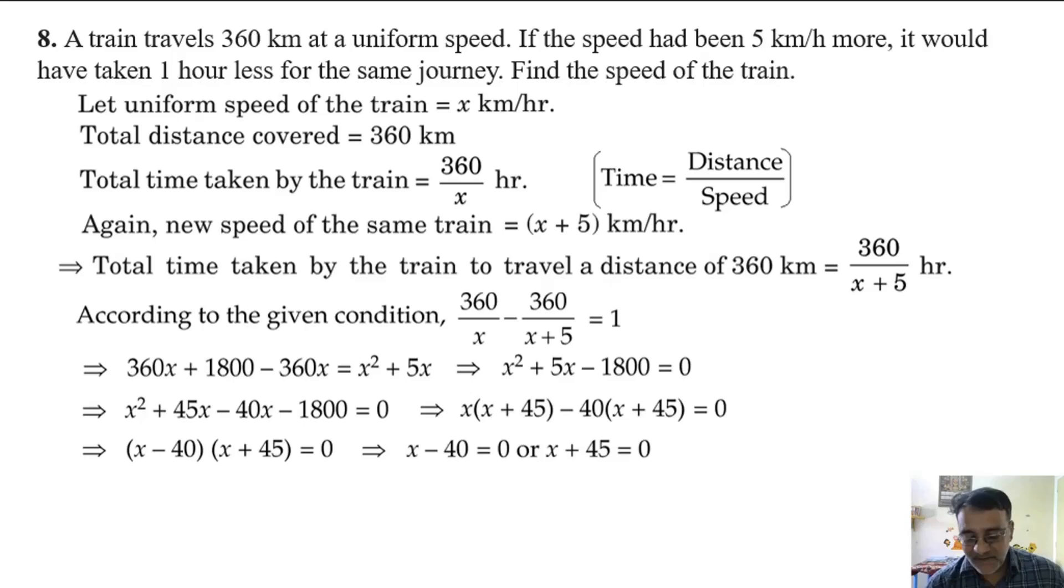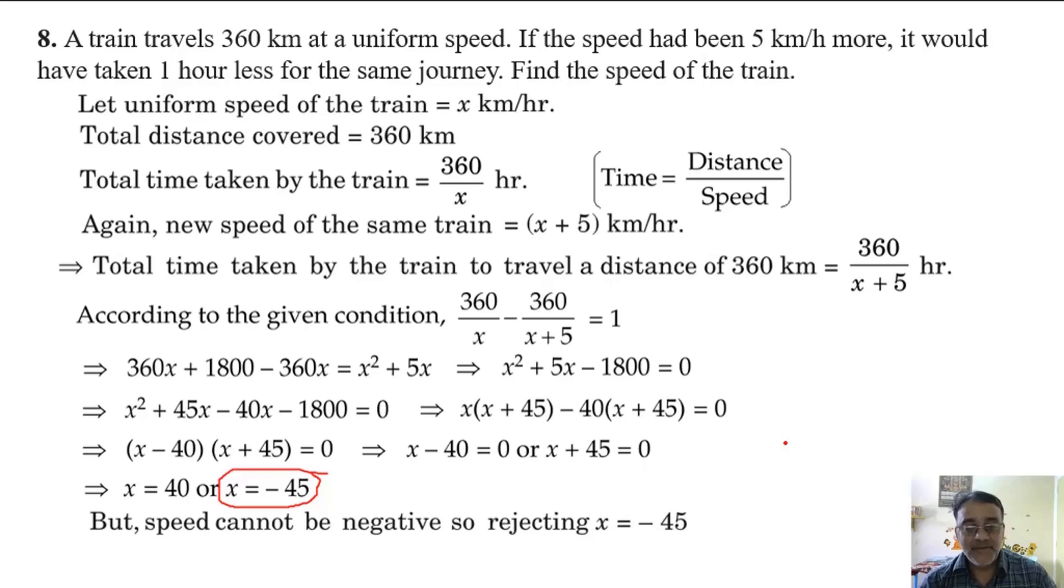x = 40 or minus 45. We have to reject minus 45. Why? Speed cannot be negative. So rejecting x = -45, we get uniform speed of the train is 40 km per hour.